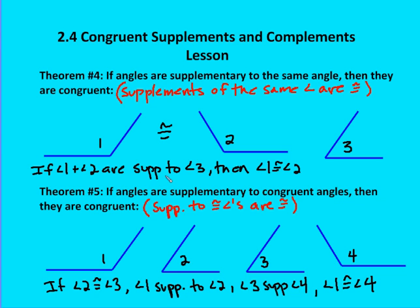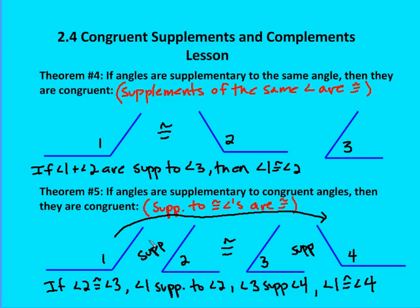Theorem five states that if angles are supplementary to congruent angles, then they are congruent. So if angle two and three are congruent, and angle one is supplementary to two, and angle four is supplementary to three, then angle one is congruent to angle four. If I have two congruent angles and angles supplementary to each of those respectively, then those angles — angle one and angle four — are congruent themselves.